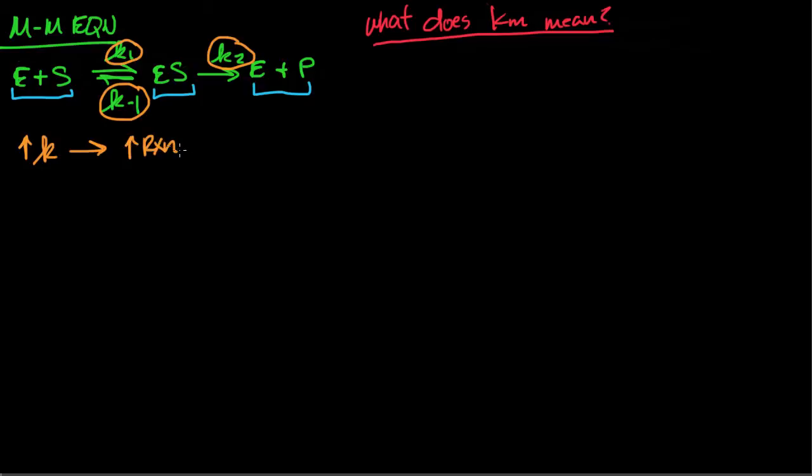So from lecture, we have the Michaelis-Menten equation, which is k2 times enzyme total times your concentration of substrate, divided by the Michaelis constant plus concentration of substrate.